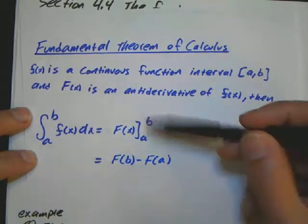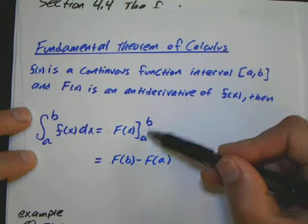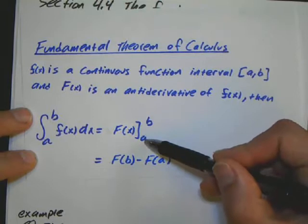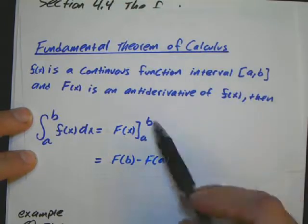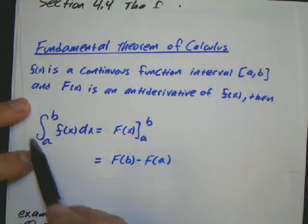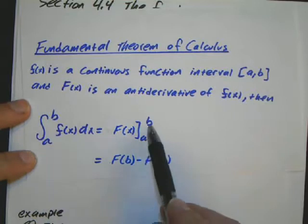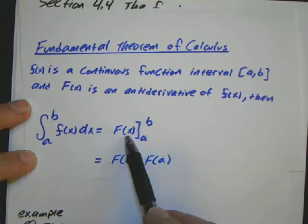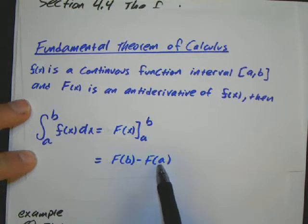And in this little notation you put the upper limit in the top of the bracket, lower limit in the bottom of the bracket. And the Fundamental Theorem says if you want to find this value, you just subtract the antiderivative at the top limit minus the antiderivative at the bottom limit.